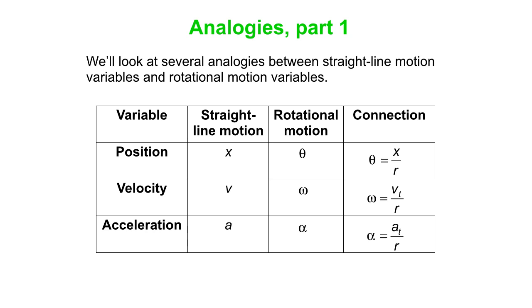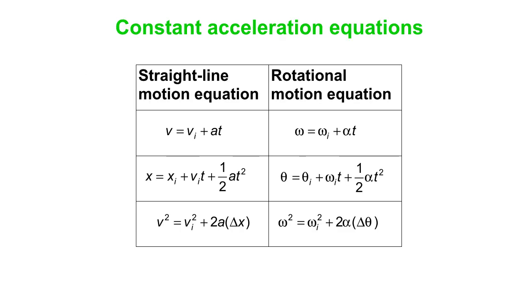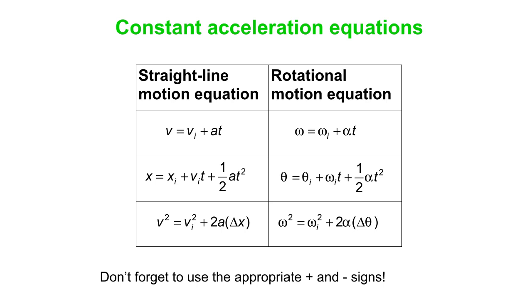Looking at the analogies: for position, velocity, and acceleration in straight-line motion we use x, v, and a; the equivalents in rotation are theta, omega, and alpha. The connection is that theta equals distance over radius, omega equals tangential velocity over radius, and alpha equals tangential acceleration over radius — where 't' stands for tangential. We also have a set of constant acceleration equations: on the left are the familiar straight-line equations, and on the right is a totally equivalent set where you replace all v's with omegas, all a's with alphas, and all x's with thetas. Use them the same way, and don't forget appropriate positive and negative signs. That's a nice introduction to rotational kinematics.